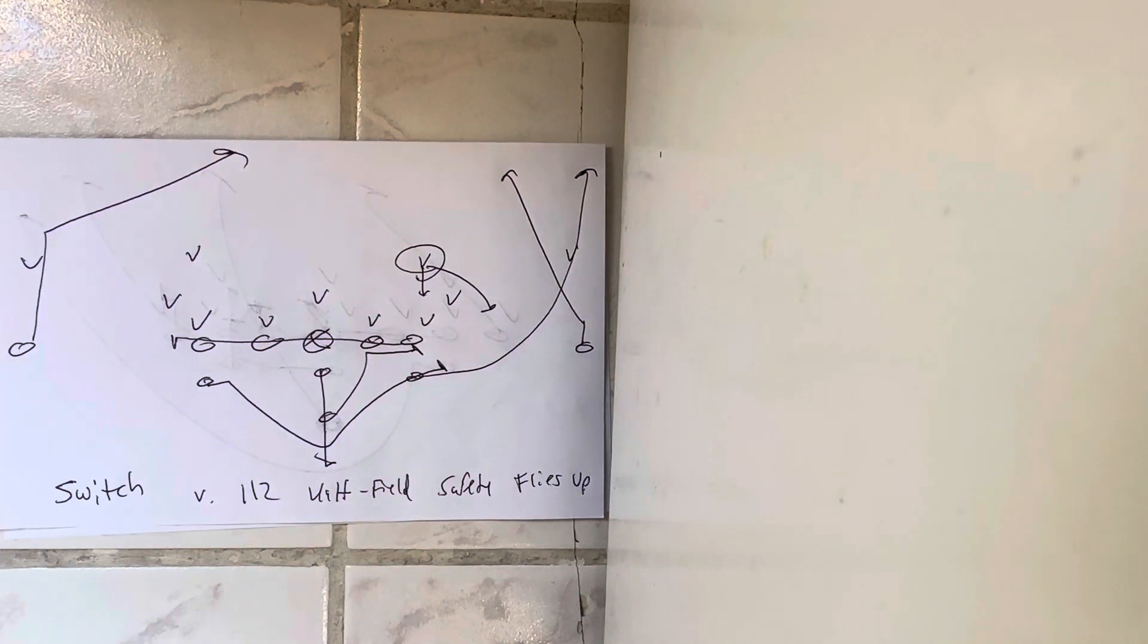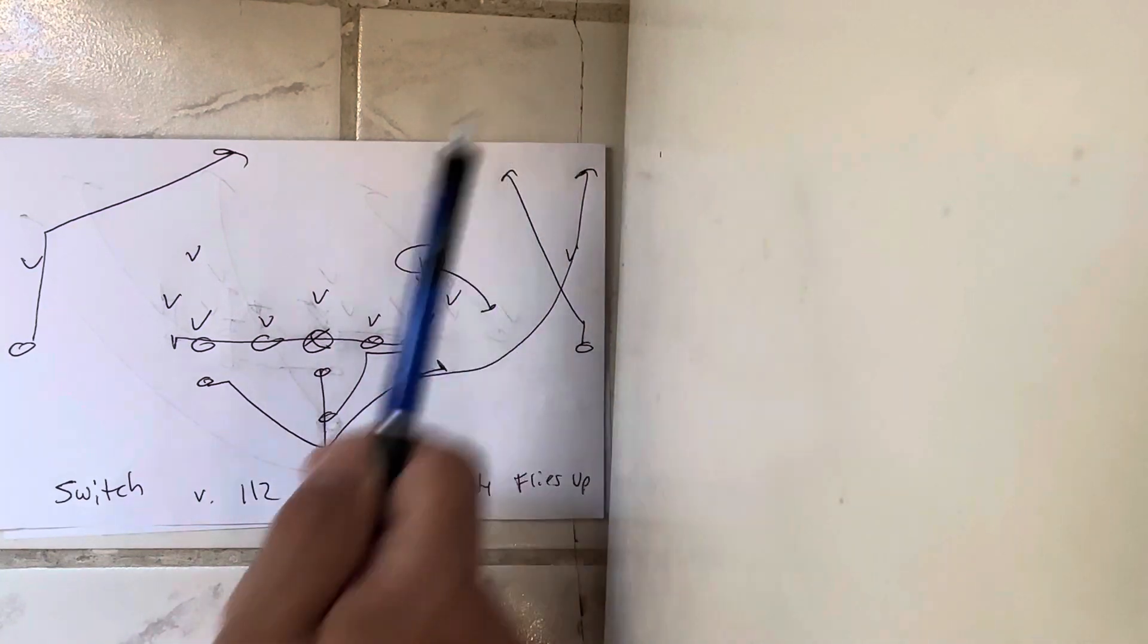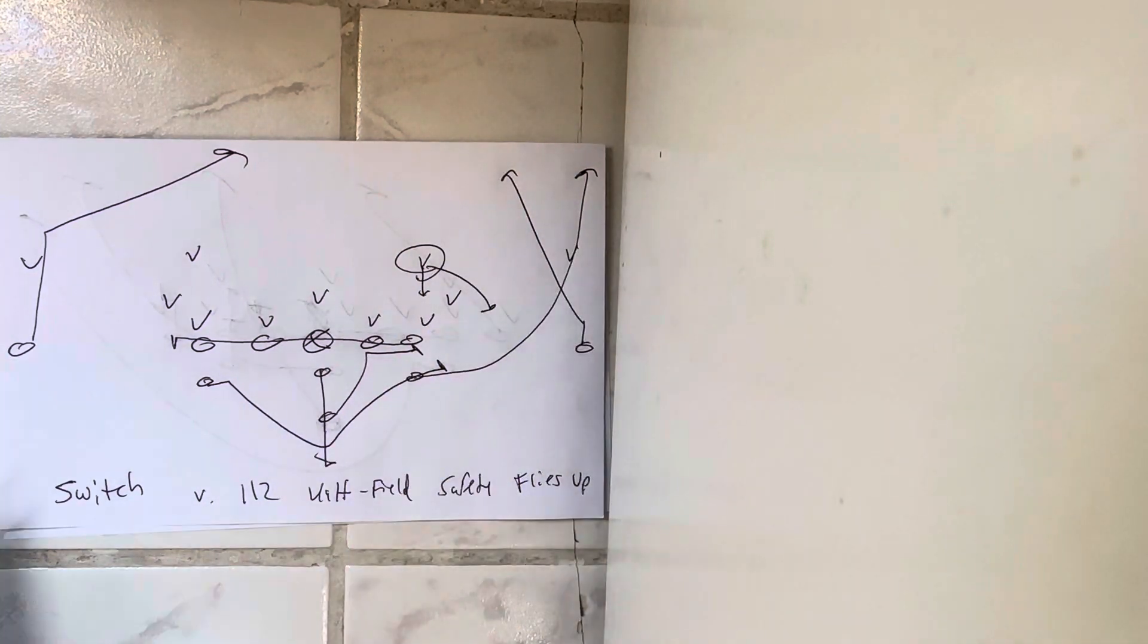So that's just how it works. But when a half-field safety flies up, you want to go after the corner, not the safety, with switch. The other thing you do is run tight, where you have him run 10 yards down the field, break on a corner route, and have him run the eight-yard stop.